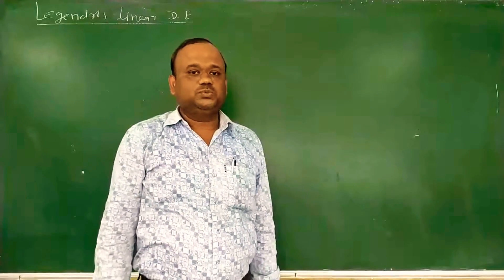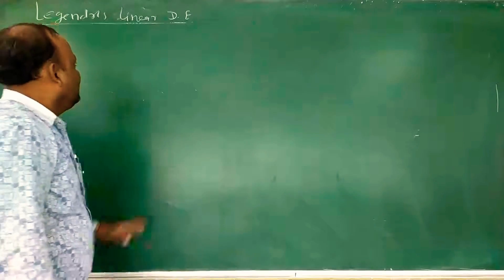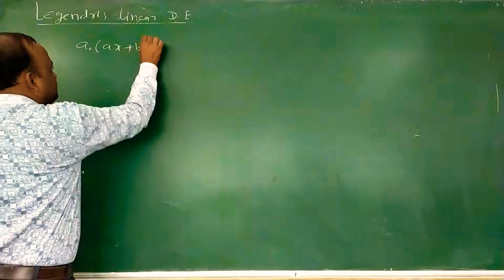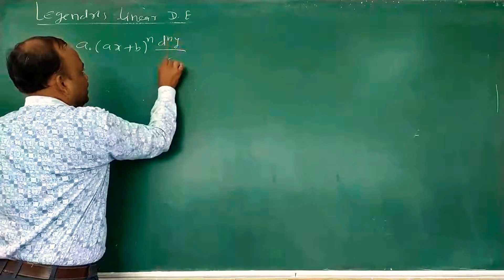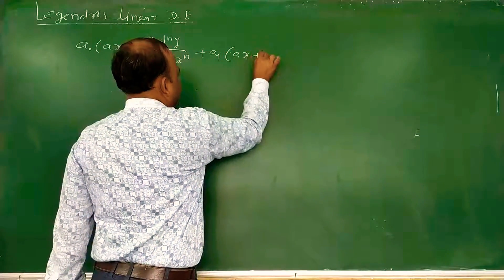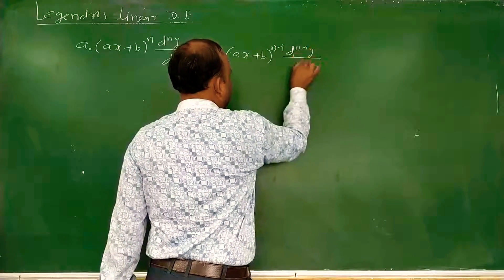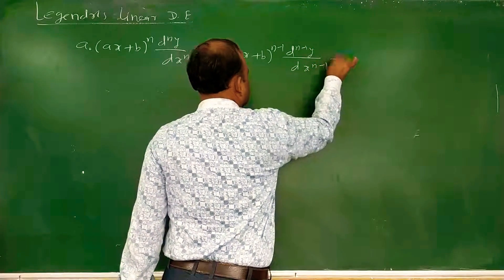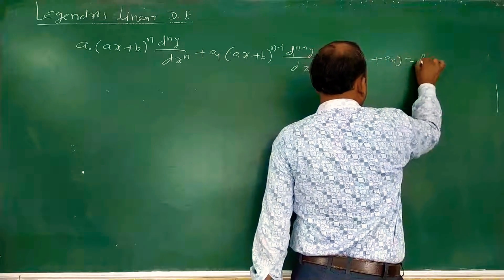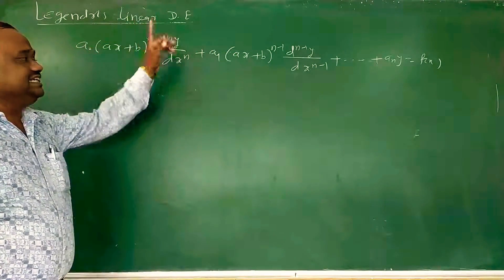Now after Cauchy's Homogeneous Linear Differential Equation, the second topic is Legendre's Linear Differential Equation. This is an equation of the type a0(ax+b)^n (d^n y/dx^n) + a1(ax+b)^(n-1)(d^(n-1)y/dx^(n-1)) + ... + a_n y = f(x). Such type of differential equations are called Legendre's Linear Differential Equation.